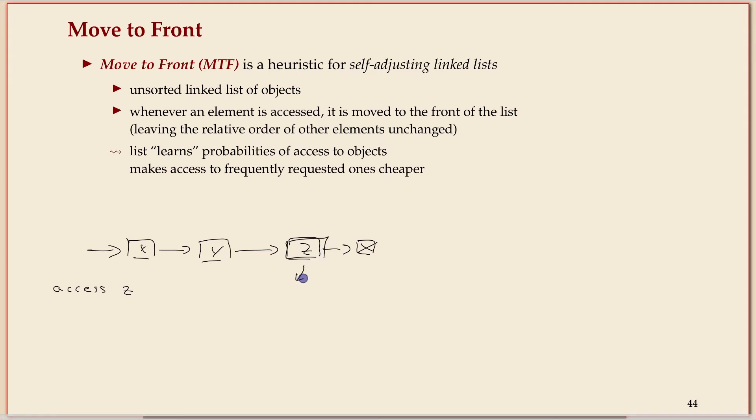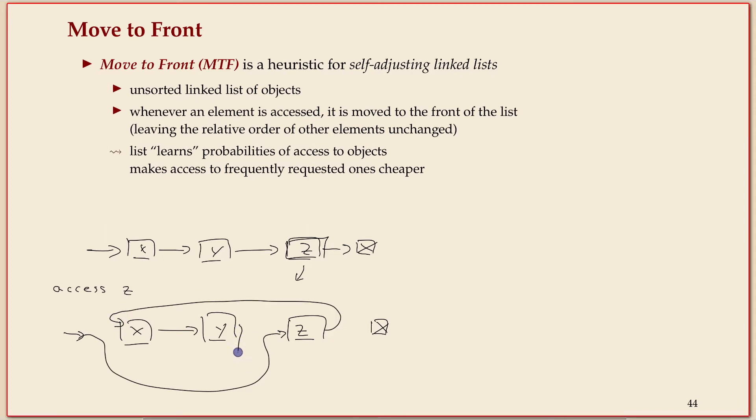If we access Z we go through the list until we find Z and then we take it out of the list. Remember in a linked list you can take elements out by just rewiring pointers, so this is a cheap operation. You make the start point to Z, then that points to the old beginning of the list, and Y now points to null. So I've just taken Z and put it at the front of the list, not changing the relative order of anything else. Then if I do the next access, maybe that's to Z again, then I find it at the first position.